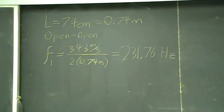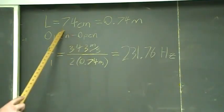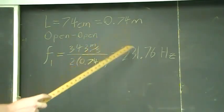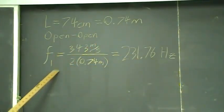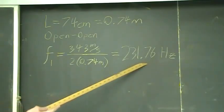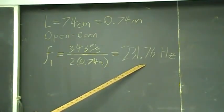Now, I tested this myself. I found a PVC tube, a speaker, and a frequency generator. I measured the tube to be 74 centimeters long, or 0.74 meters. And then I used the formula I just showed you to calculate its resonant frequency. In this case, 231.76 hertz.